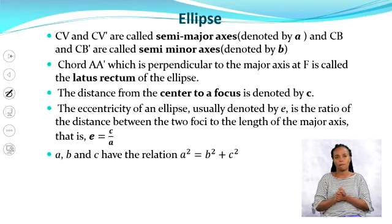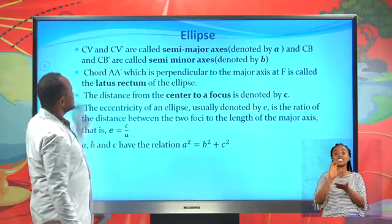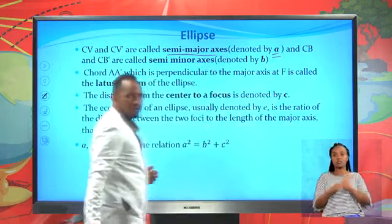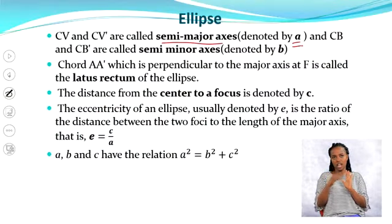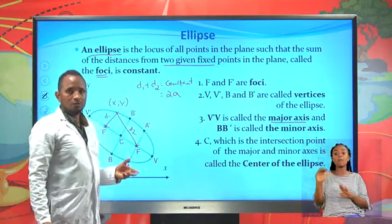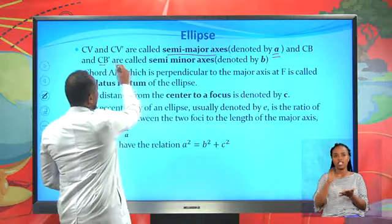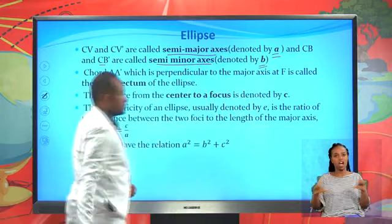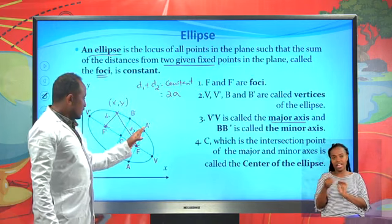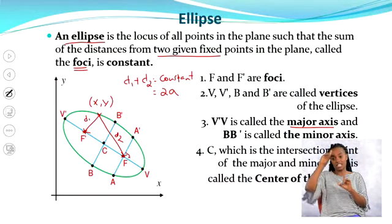The distances c to v and c to v prime are called the semi-major axis, denoted by a. The distances c to b and c to b prime are called the semi-minor axis, denoted by small letter b. The chord aa prime which passes through the focus perpendicular to the major axis, we call it the latus rectum of the ellipse. The distance from the center to a focus is constant, denoted by c.